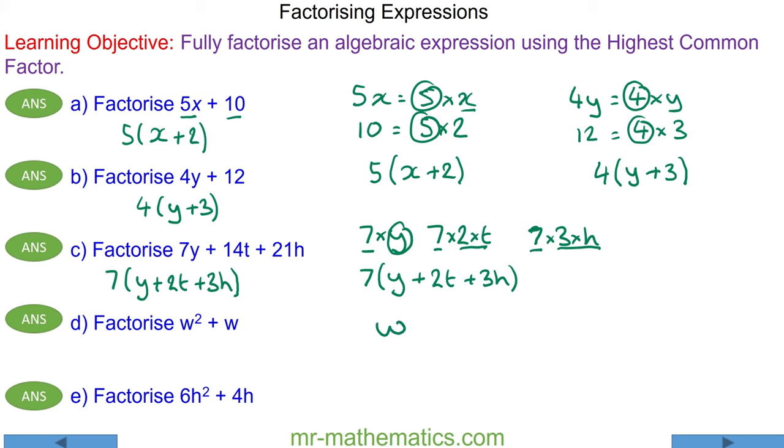For question D, we have w squared plus w. W squared can be written as w times w, and w can be written as itself multiplied by 1. W is the highest common factor of both terms. So that goes on the outside of the bracket, and we have w times itself to make the w squared, and multiplied by 1 to make the w.